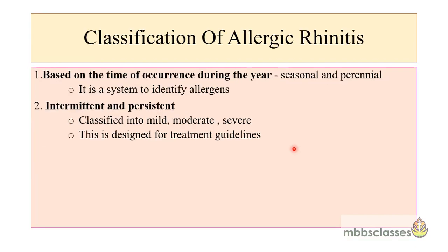Now let's see the classification of allergic rhinitis. Allergic rhinitis may be classified based on the time of occurrence: it may be seasonal when it occurs in one particular season, or perennial when the symptoms are present throughout the year. But nowadays, most commonly we classify allergic rhinitis as whether the symptoms are intermittent or persistent, with a subgrading of mild, moderate and severe. To administer the treatment, we follow the second classification - intermittent and persistent - which is designed to guide treatment of the disease.